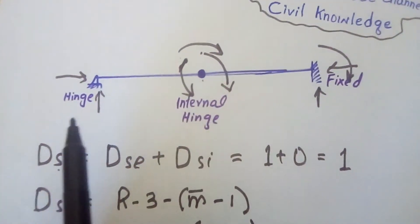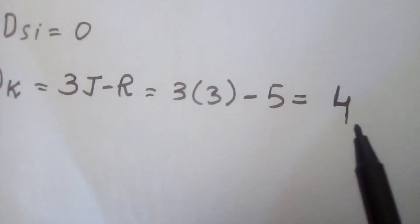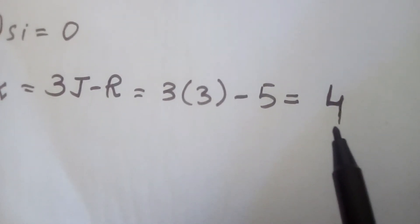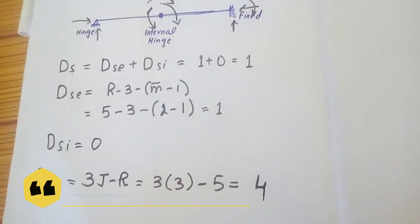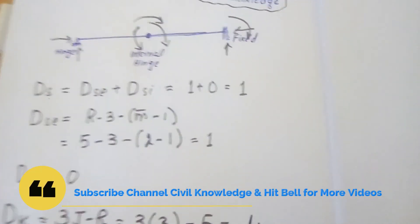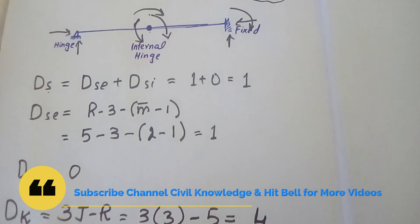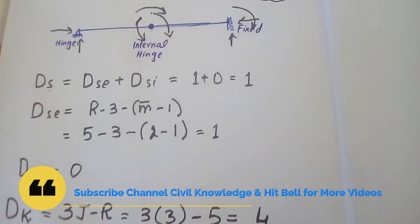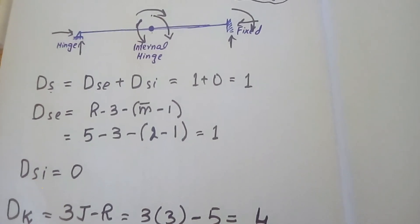By summing the degrees of freedom at all joints: 3 + 1 + 0 = 4, confirming the kinematic indeterminacy equals four. We can also find kinematic indeterminacy manually just by pointing out the degree of freedom at all joints and summing them. We have now found the static degree of indeterminacy (DS = 1) and kinematic degree of indeterminacy (DK = 4) for this beam. If you have any questions, ask without hesitation. My next video will cover how to determine the degree of indeterminacy for a frame structure — keep watching, thank you.